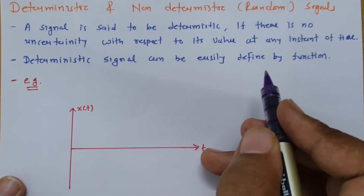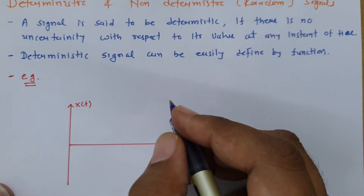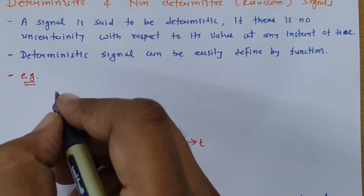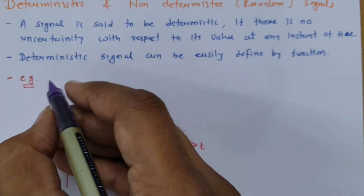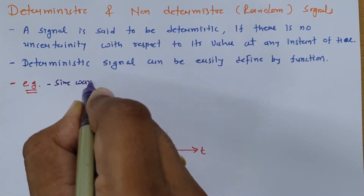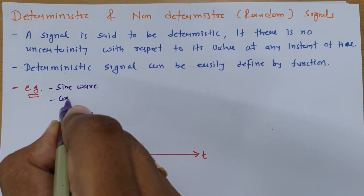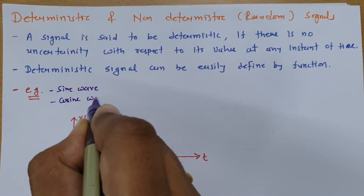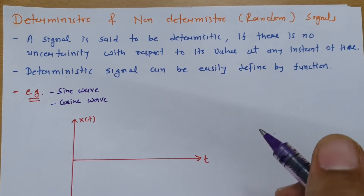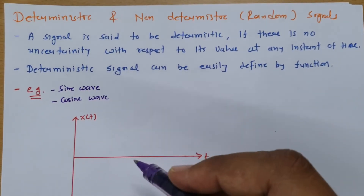A deterministic signal can be easily defined by a function. For example, a few well-known deterministic signals are: sine wave, cosine wave, square wave, and the signum function. All those signals are deterministic signals.